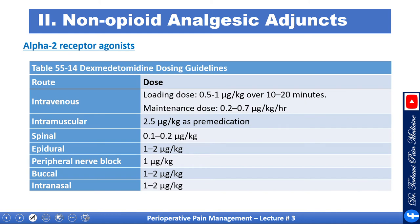The most frequent adverse effects of dexmedetomidine are bradycardia and hypertension, especially with high bolus doses, which can be adequately treated with atropine, glycopyrrolate, and ephedrine. Dosing for IV use is 0.5 to 1 mcg per kg over 10 to 20 minutes followed by a maintenance infusion, and it can also be used spinally, epidurally, via peripheral nerve, buccally, and intranasally.